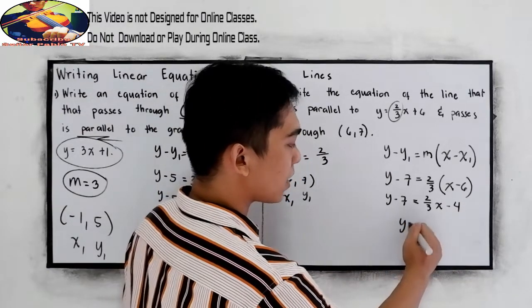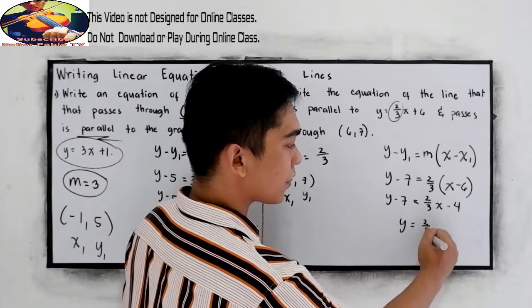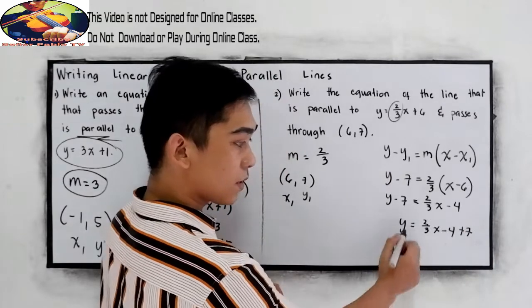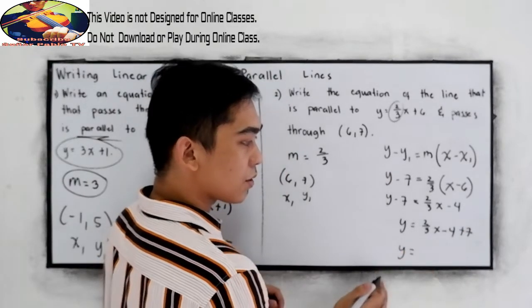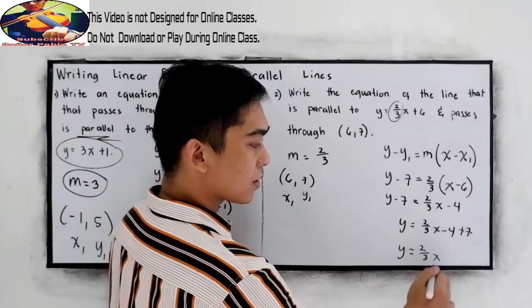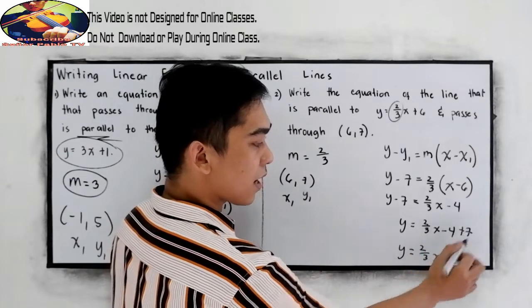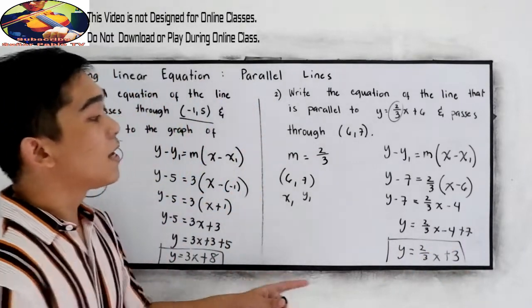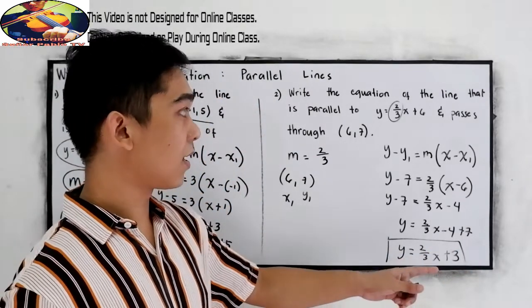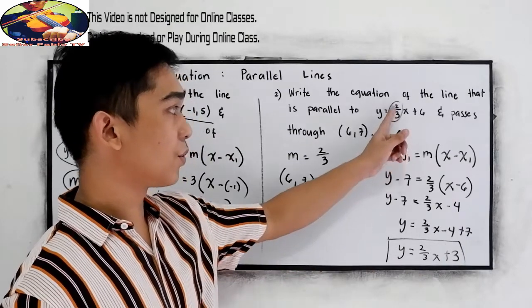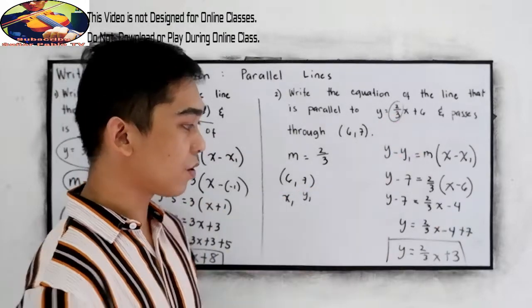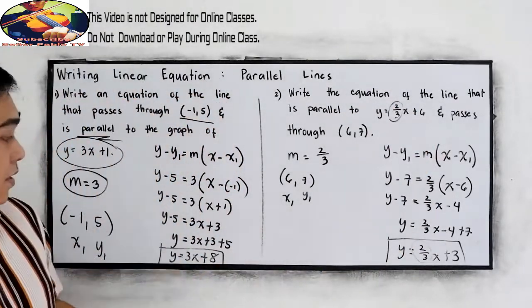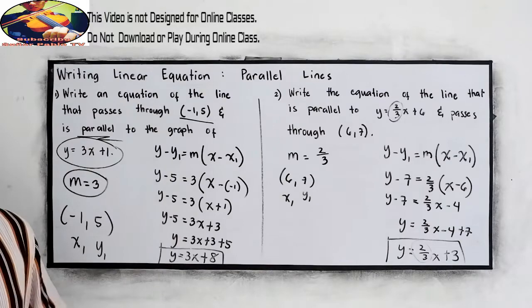So y is equal to 2 over 3x minus 4 plus 7. So we now have y is equal to 2 over 3x, negative 4 plus 7 is positive 3. This is now the line that is parallel to 2 over 3x plus 6. Notice that we have the same slope for parallel lines.